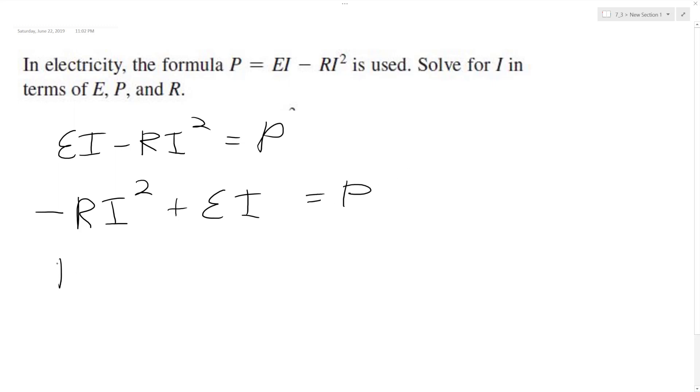And we're going to divide through by negative 1. So we have RI squared plus EI equals negative P, and this should be minus.